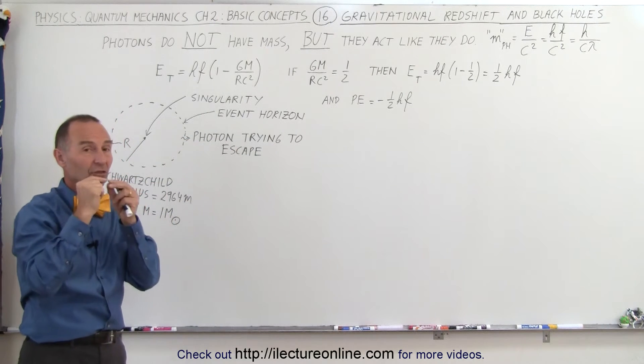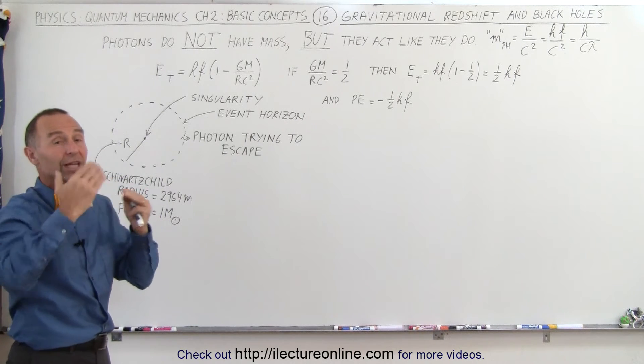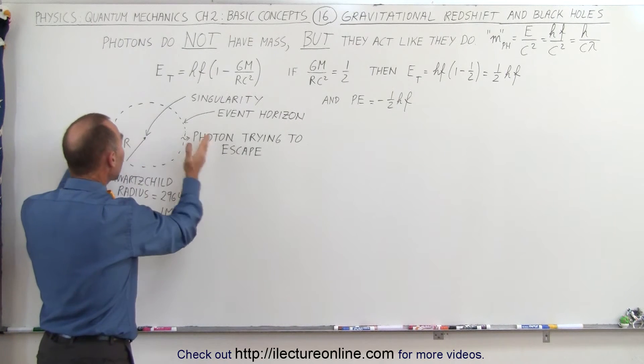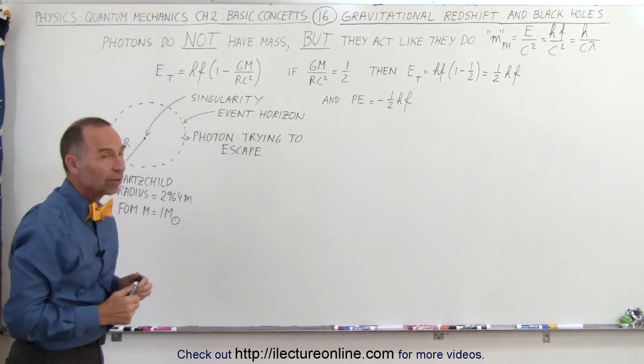Inside the event horizon, the potential energy would increase, the kinetic energy would decrease, it would not have enough energy to get out, and no light can escape the black hole when it's inside the event horizon.